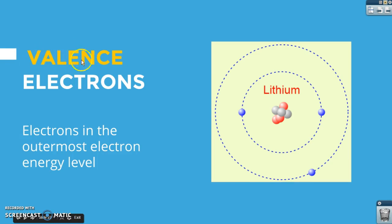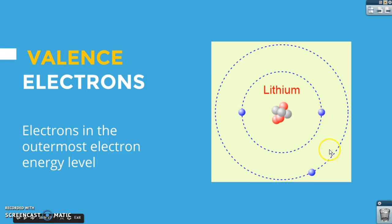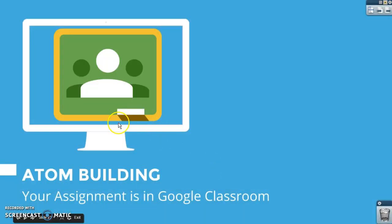We also need to know about valence electrons — the electrons in the outermost energy level. Only two electrons can fit in the first energy level, and in this activity you can't drag more than two electrons into it. An atom with three protons and three electrons has one valence electron in its outermost energy level. Your assignment is in Google Classroom, and I'll post another video going over it. Thanks, guys!